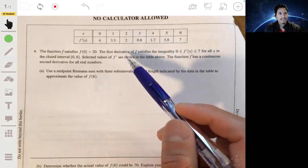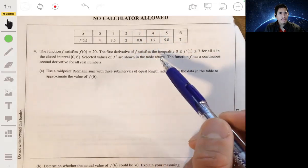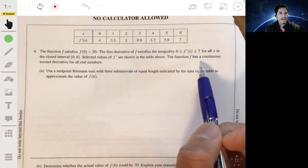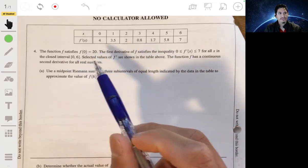This table shows selected values of f prime, and we're told that the function f has a continuous second derivative for all real numbers.